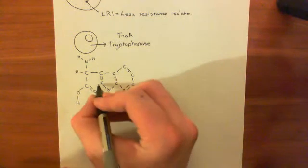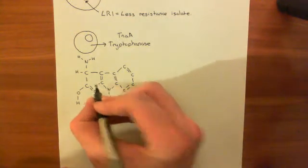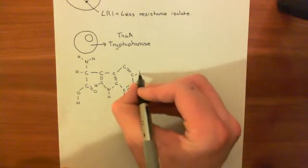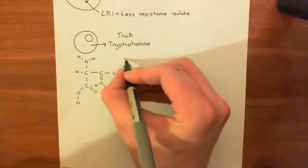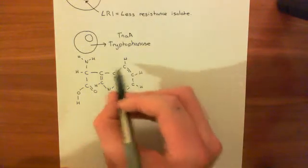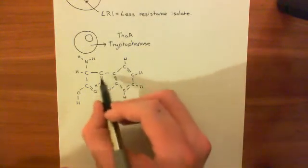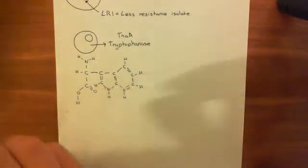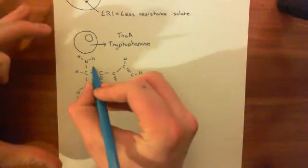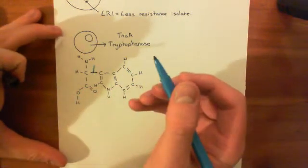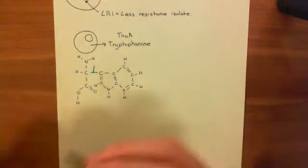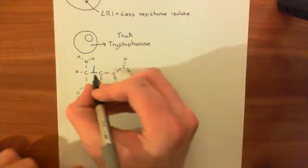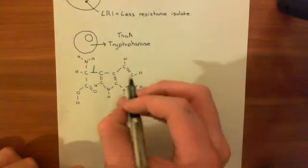And then we need alternating single and double bonds like that. Now we just need to put hydrogens on any free bonds. So here's a free bond, here's a free bond, here's a free bond, and here's a free bond. Now this ring that you have here, well, this double ring, you have a six-membered ring attached to a five-membered ring. Wait, wait, wait, I've drawn tryptophan wrong. I've missed a little bit out.